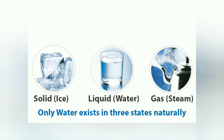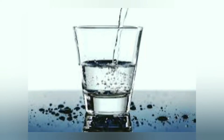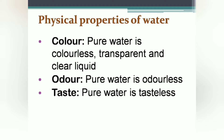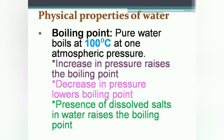Pure water is a clear liquid with no color and it is transparent. It is odorless, meaning it has no smell, and it has no taste. At one atmospheric pressure the boiling point of water is 100 degrees Celsius. But if the pressure is changed or impurities are added to water, its boiling point gets affected.